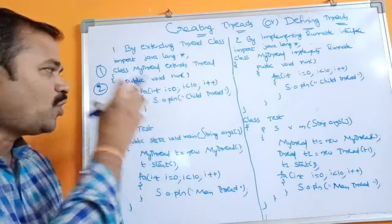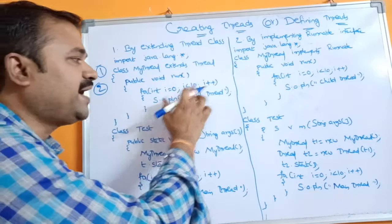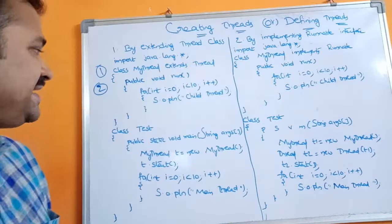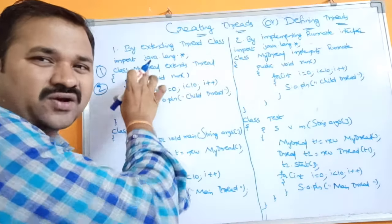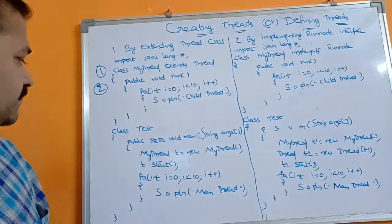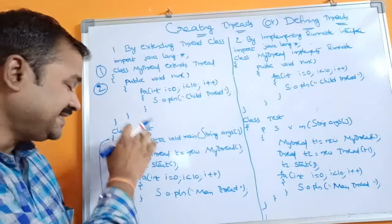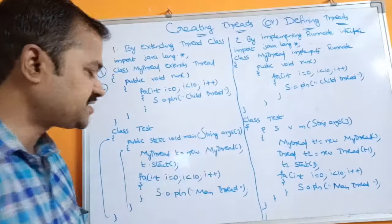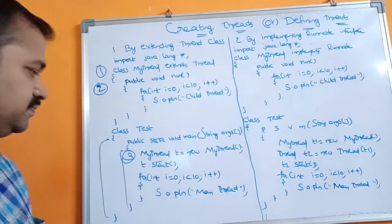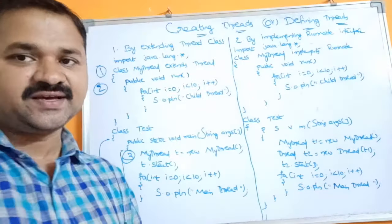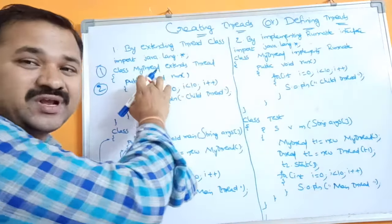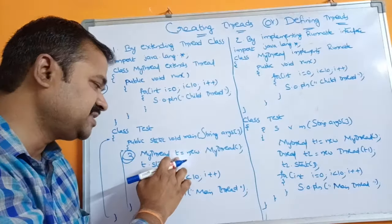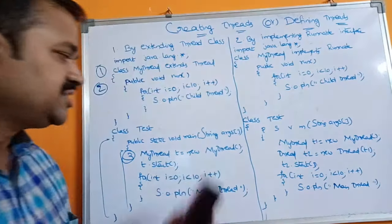The body of the run() method is: for (int i = 0; i < 10; i++) System.out.println("child thread"). So we print the child thread message 10 times. This is called the child thread or user-defined thread. In the main class — class Test with public static void main — the third step is to create an object for MyThread: MyThread t = new MyThread().